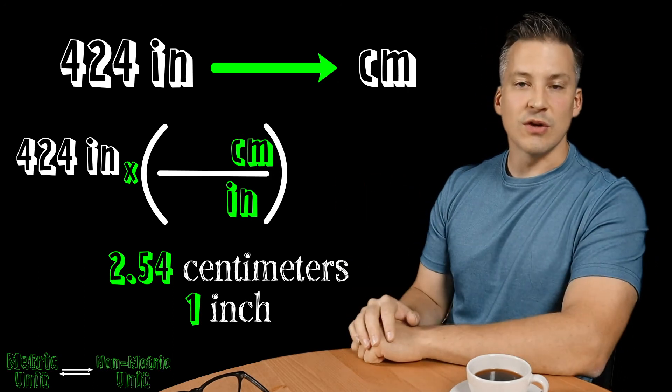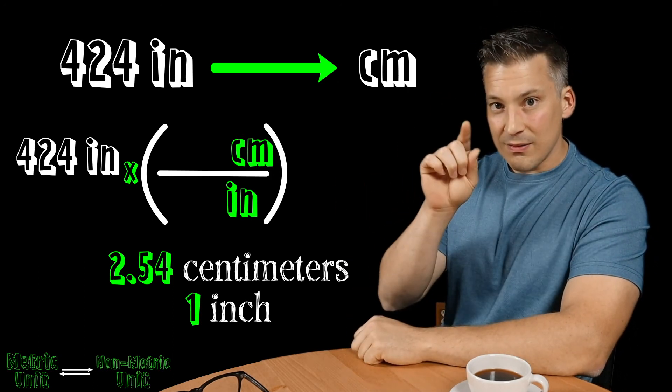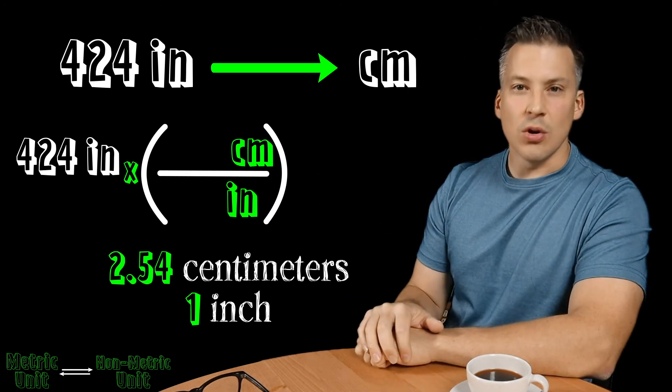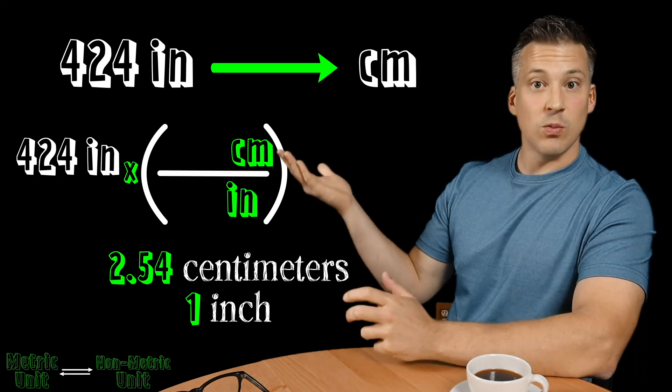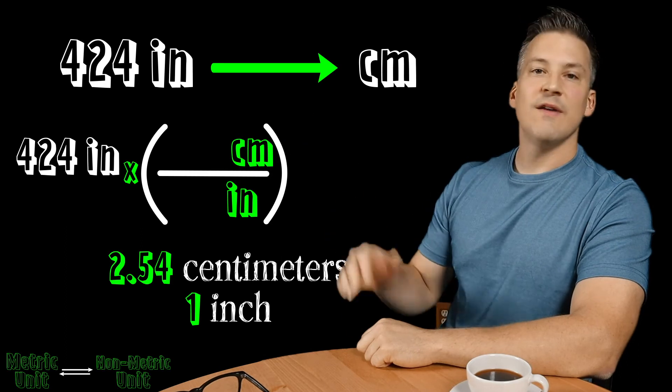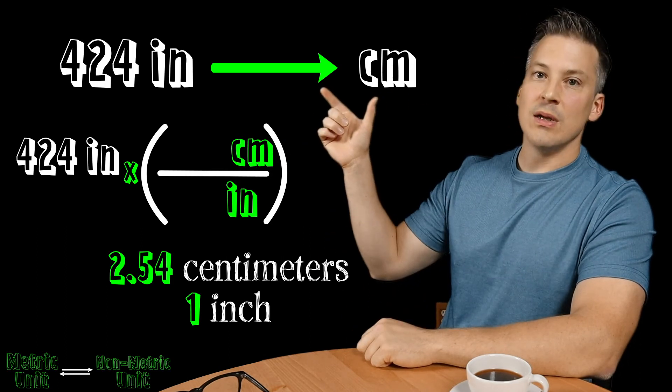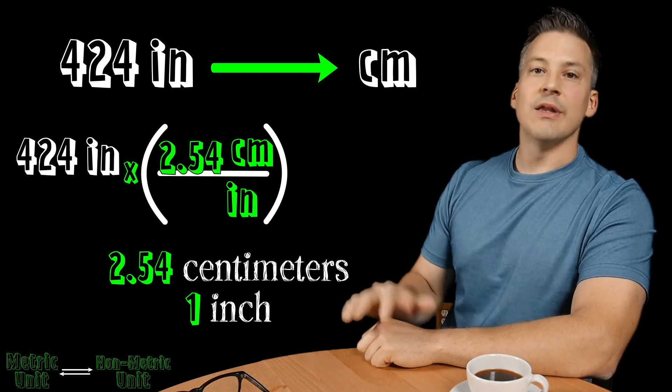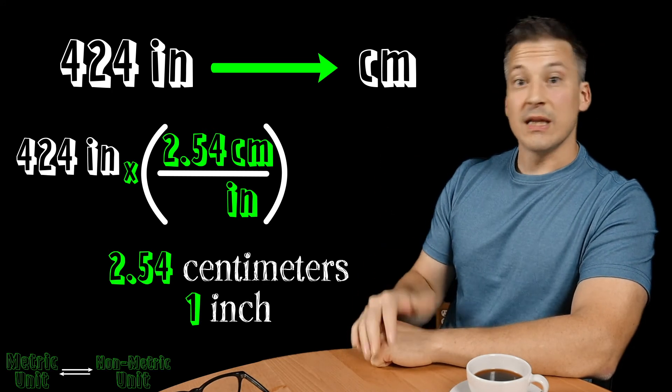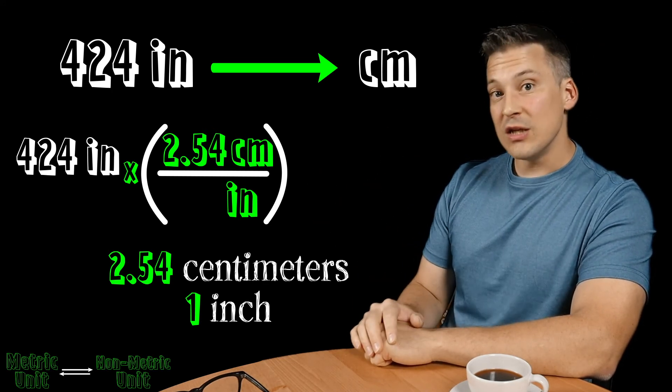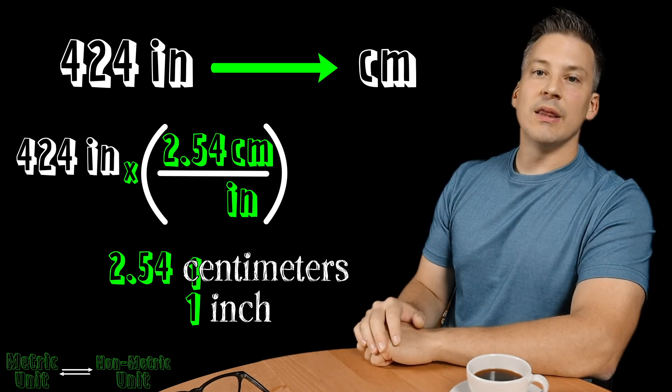So in this particular case, we know that there is going to be 2.54 centimeters in one inch. Again, we need to know that in order to do this conversion. And that, or I should say those values, go into that conversion fraction now. So the centimeter value there was 2.54, so take that value and plug it in for the centimeter there on the top.